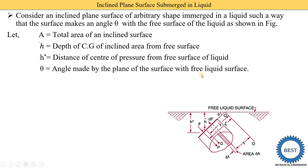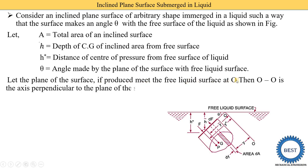Theta is the angle made by the plane of the surface with the free liquid surface. If the plane of the surface is produced, it meets the free liquid surface at point O. From this point O, we draw a perpendicular line to the plane of the surface — that is, the O-O plane at 90 degrees. Three new parameters are introduced compared to the vertical plane surface: Y, Y*, and Ȳ.